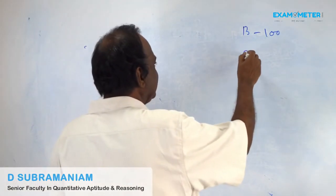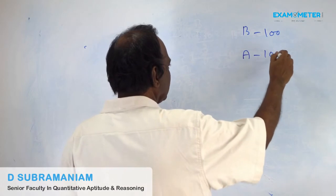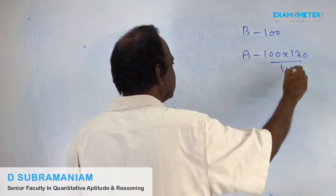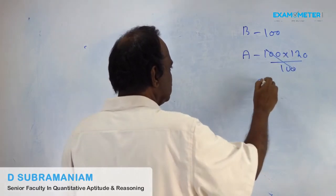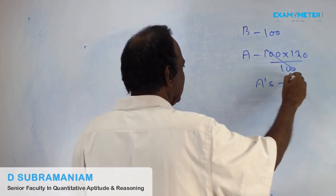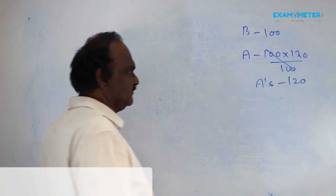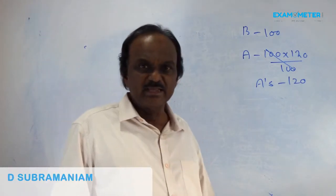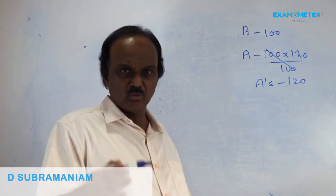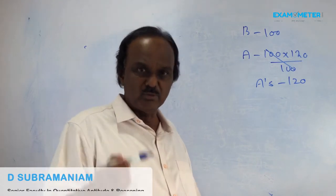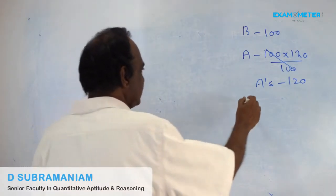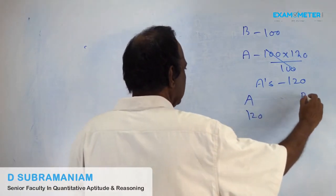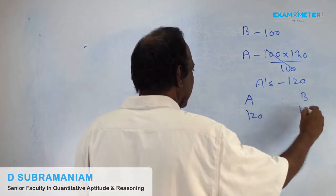A's salary is 20% more. So if you assume B's salary is 100, A's salary will be 120. If A's salary is 120, B's salary is 100.